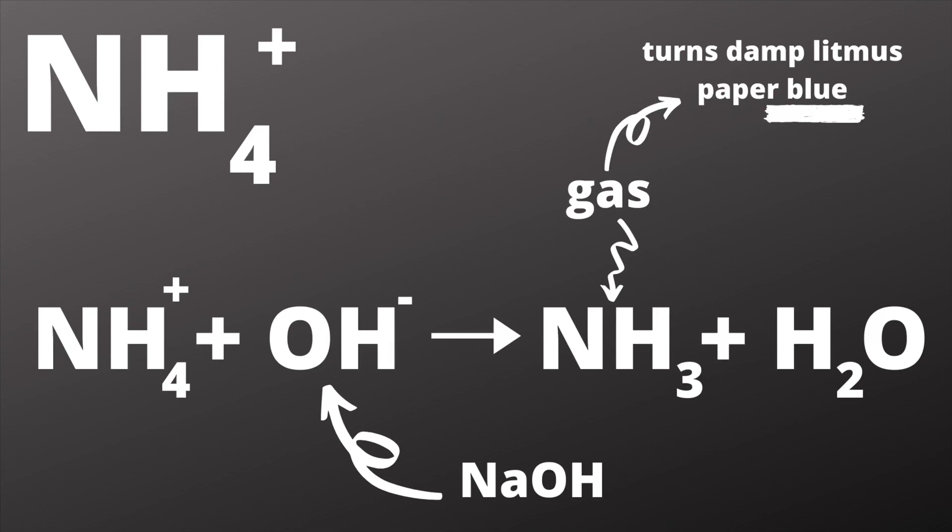what we do is hold some moist or damp red litmus paper over the open end of the test tube. If the ammonia gas is present and being kicked out by the reaction, then the moist litmus paper will turn blue, indicating its presence.